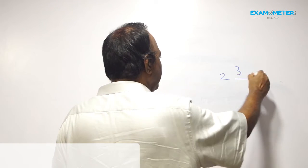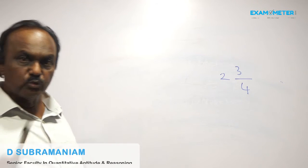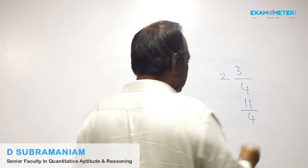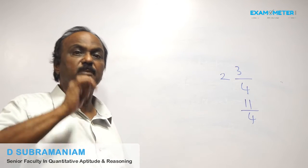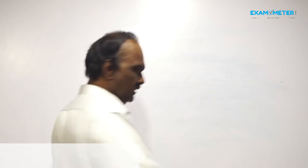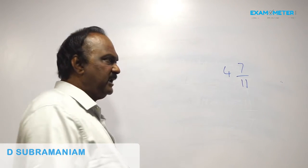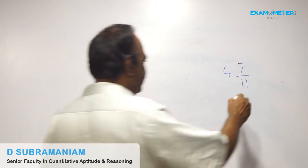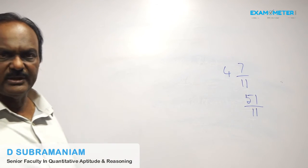For example, 2 and 3 by 4 is a mixed number. To convert it into an improper fraction: 4 into 2 is 8, 8 plus 3 is 11, so 11 by 4. Similarly, 4 and 7 by 11: 11 into 4 is 44, 44 plus 7 is 51, so 51 by 11 — that is an improper fraction.